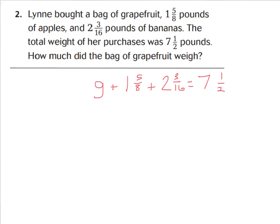We can work backwards to find the value of the grapefruit. You could start with seven and a half and subtract two and three-sixteenths, then subtract one and five-eighths to get the leftover grapefruit amount. But personally, I'd much rather combine the known values first and then subtract from seven and a half — that's just less work.